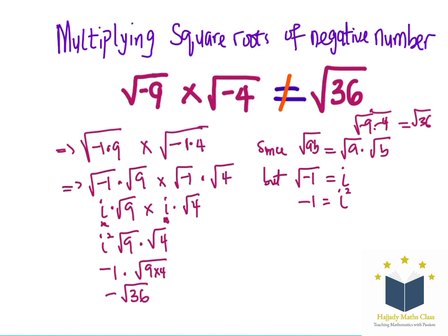So, this shows that the answer is not going to be the same thing as square root of 36. Finally, this can be written as negative 6. So, this is going to be the final answer.